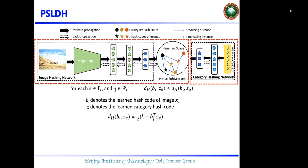It can be found that when the hash code B_i of an image X_i can preserve the semantic information sufficiently, then B_i will be similar to the category hash code whose corresponding category X_i belongs to, and B_i will be dissimilar to the category hash code whose corresponding category X_i does not belong to.